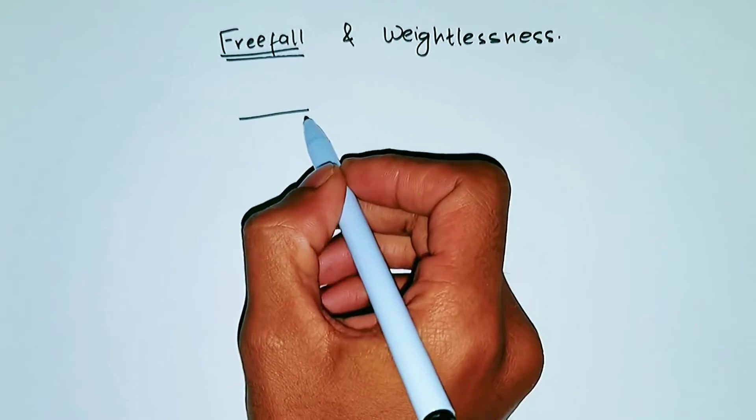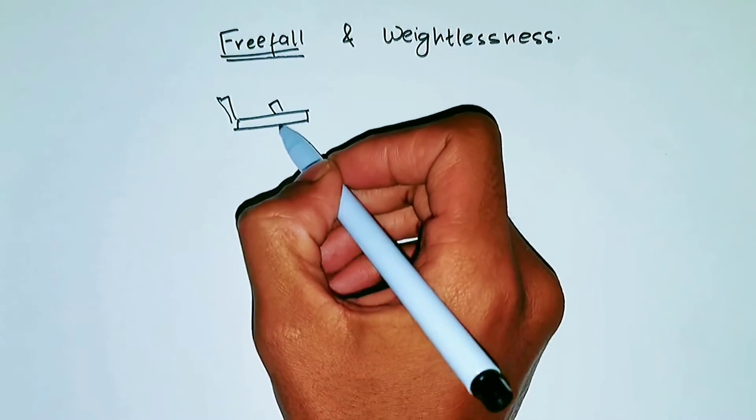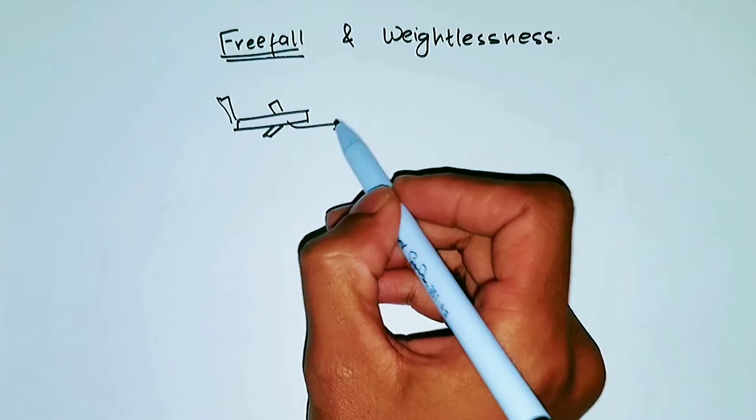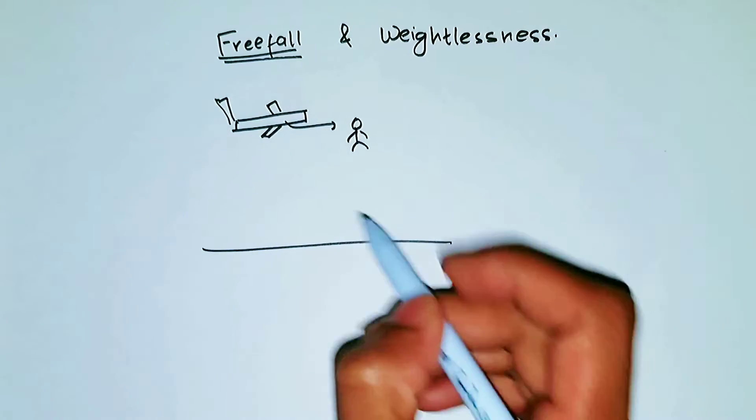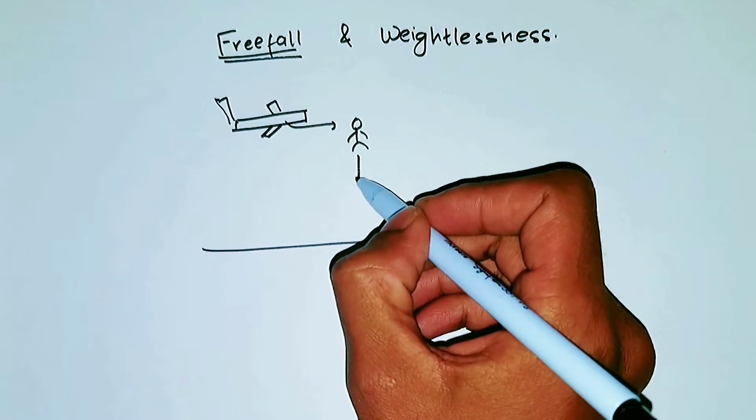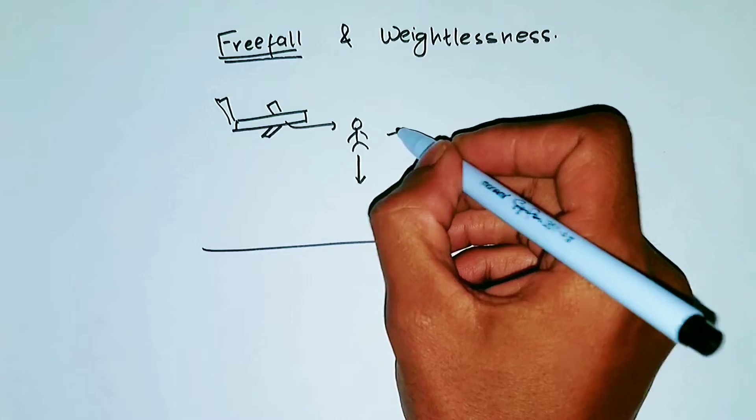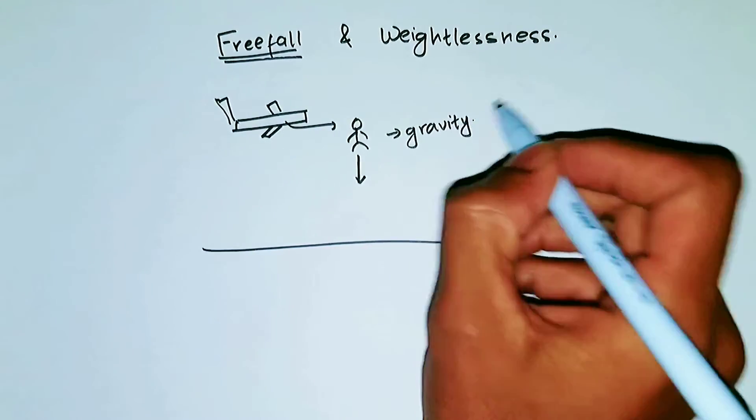So let's say there is a big airplane. Okay, it looks tiny but just imagine it's a big airplane. And a person jumps from this plane towards the surface of Earth. Now, when this person jumps off the airplane, this person is being attracted by the gravity towards the surface of Earth. That's why he or she falls.